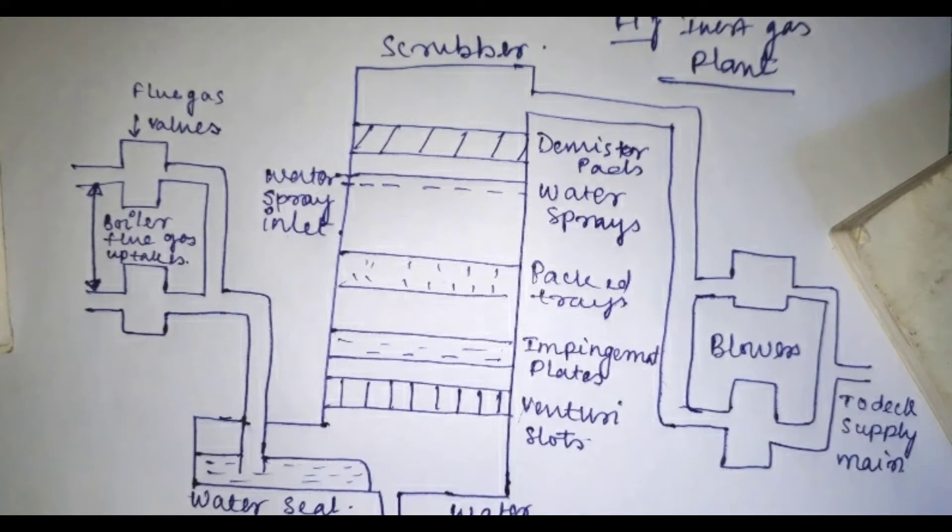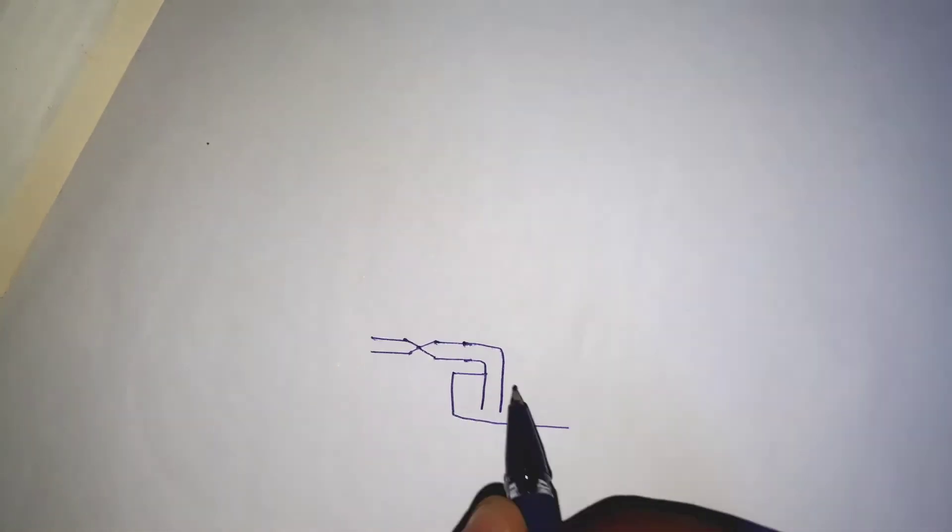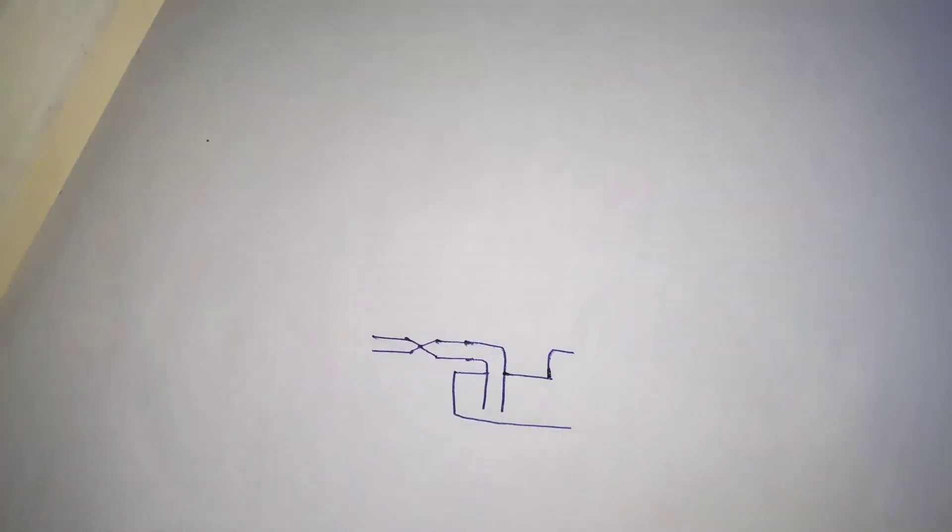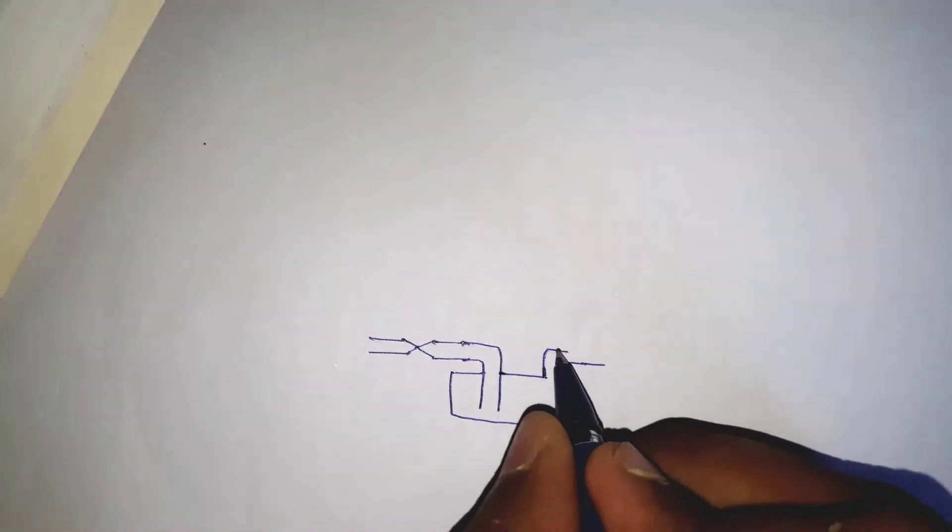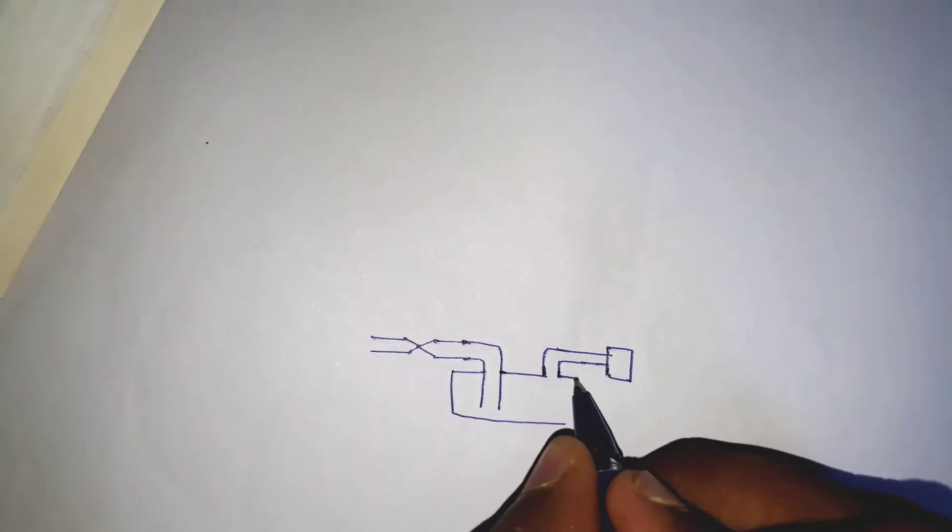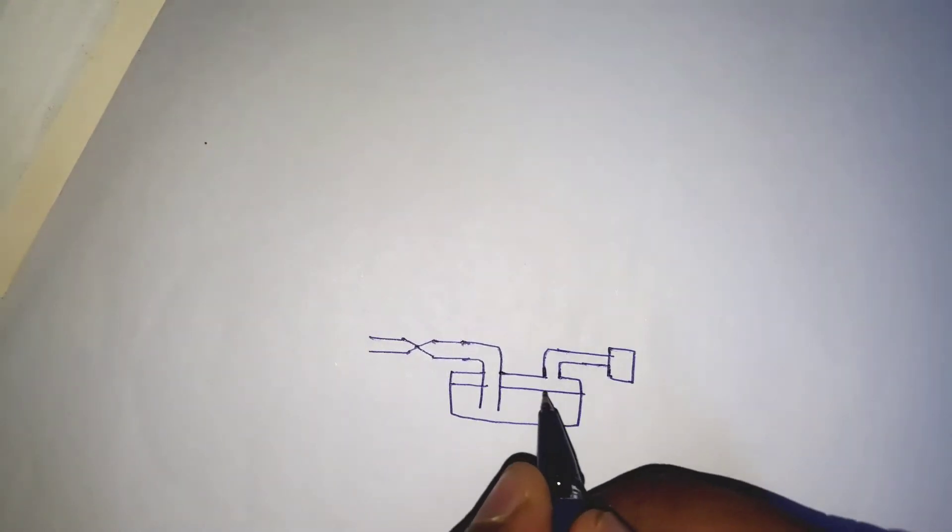Now we will see the distribution system of inert gas. The gas is distributed through pipes which are fitted with pressure control arrangements to regulate the flow of gas to the main distribution pipe on the deck and to prevent any backflow of gas in the event of a mechanical failure in the plant.